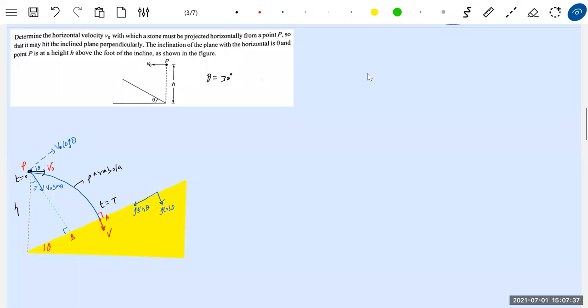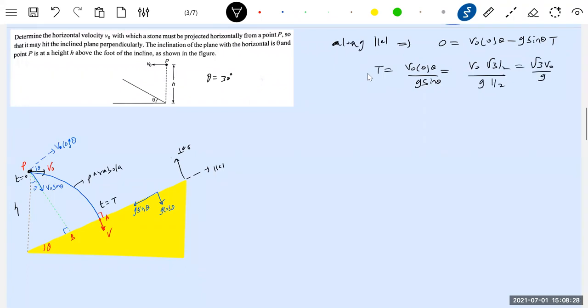Now along the incline, let me write the equation. So along the incline, first of all what is incline? Parallel to incline, perpendicular. Along parallel direction. Now what equation can we write? Zero is equal to v not cos theta minus g sin theta into T. So what is T equal to? V not cos theta by g sin theta. V not, we don't know, cos theta is root three by two, this will be g by two. So root three v not by g.